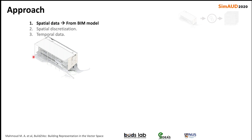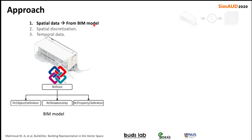Firstly, we extract the spatial data using building information models. We use industry foundation classes — IFC files — to extract the spatial objects such as walls, doors, windows, spaces, and so on, in addition to the relationship between these objects and the properties of each object.